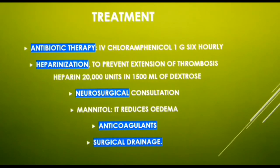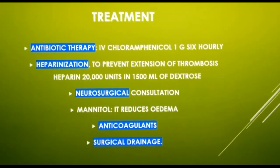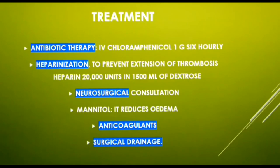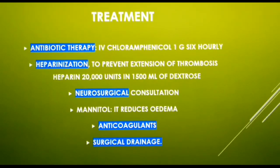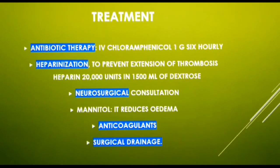Cavernous sinus thrombosis management includes the use of antibiotics directed at the causative organism and surgery to remove the primary source of infection. Immediate empirical antibiotic coverage is mandatory, followed by specific antibiotics adjusted to cultures and sensitivities. Heparinization followed by antibiotic therapy helps prevent extension of thrombosis. Meningitis, ophthalmoplegia, and Kernig signs are confirmatory findings of neurological involvement, so a neurosurgical consultation is a must. IV mannitol helps reduce brain edema, anticoagulants prevent venous thrombosis, and surgical drainage with elimination of the primary source of infection is also very important.